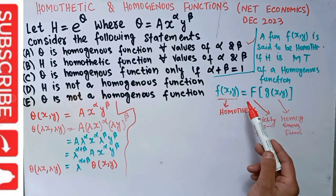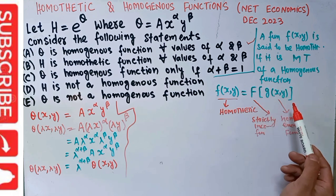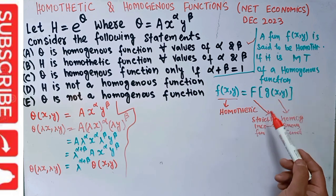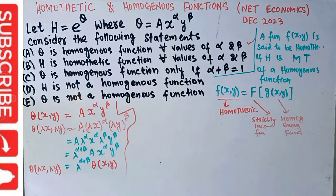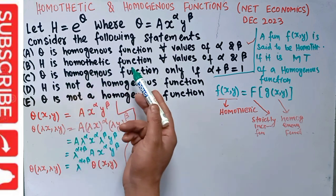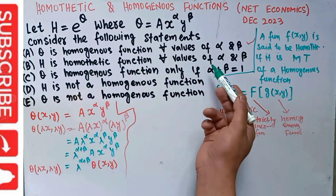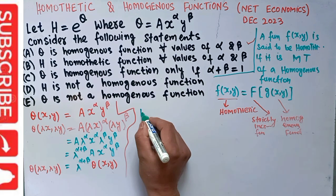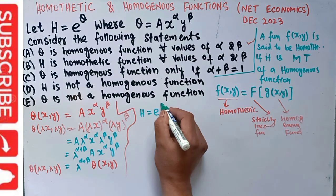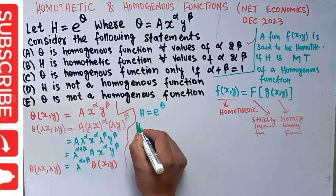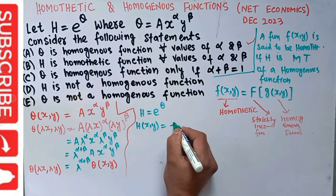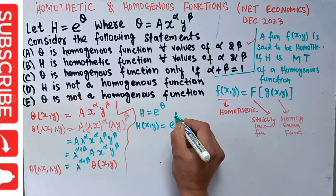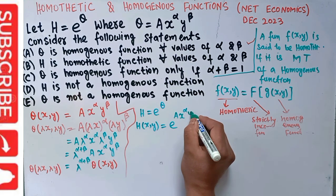This function is homothetic only if it is a monotonic transformation of a homogeneous function. So we need a homogeneous function and a monotonic transformation. Now let us apply this to h. We have h(x, y) = e^q, where q = a * x^α * y^β.